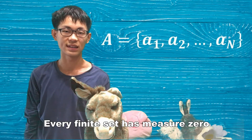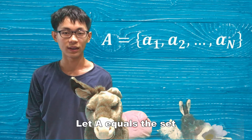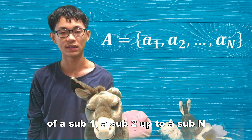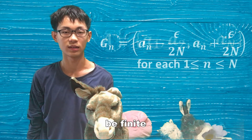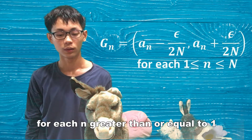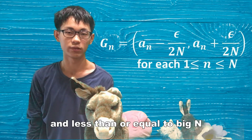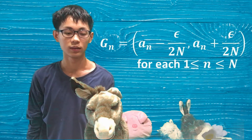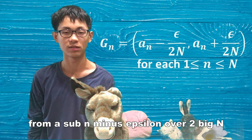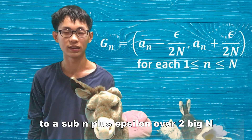Every finite set has measure zero. Let A equal the set {A sub 1, A sub 2, up to A sub N} be finite. Given epsilon greater than zero, for each n with 1 less than or equal to n less than or equal to big N, let G sub n be the open interval from A sub n minus epsilon over 2 big N to A sub n plus epsilon over 2 big N.